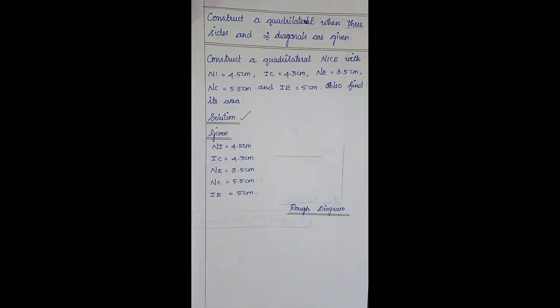In the solution, the first thing we want to write is the given data from the question. The second thing is the rough diagram. After completing the fair diagram, we can come to the rough diagram. So now we are going to see the fair diagram first.